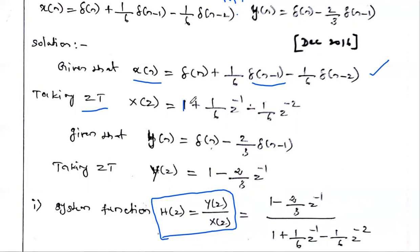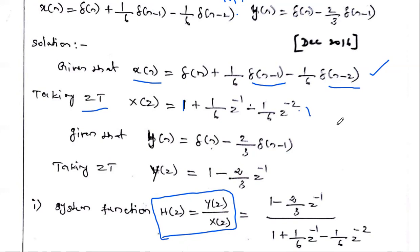Similarly, minus (1/6) times the Z-transform of δ(n−2): the Z-transform of δ(n−2) is z^(−2) times 1. So X(z) = 1 + (1/6)z^(−1) − (1/6)z^(−2).